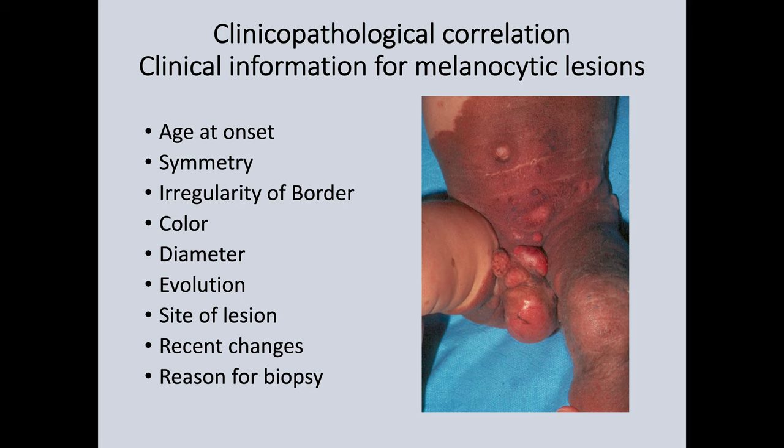So let's say we have a male in his 40s and he has a three-month history of a pigmented lesion on his back, and histologically that shows melanoma in situ. Well, that's not a great problem — it's an easy diagnosis to make, so you can sort that out.